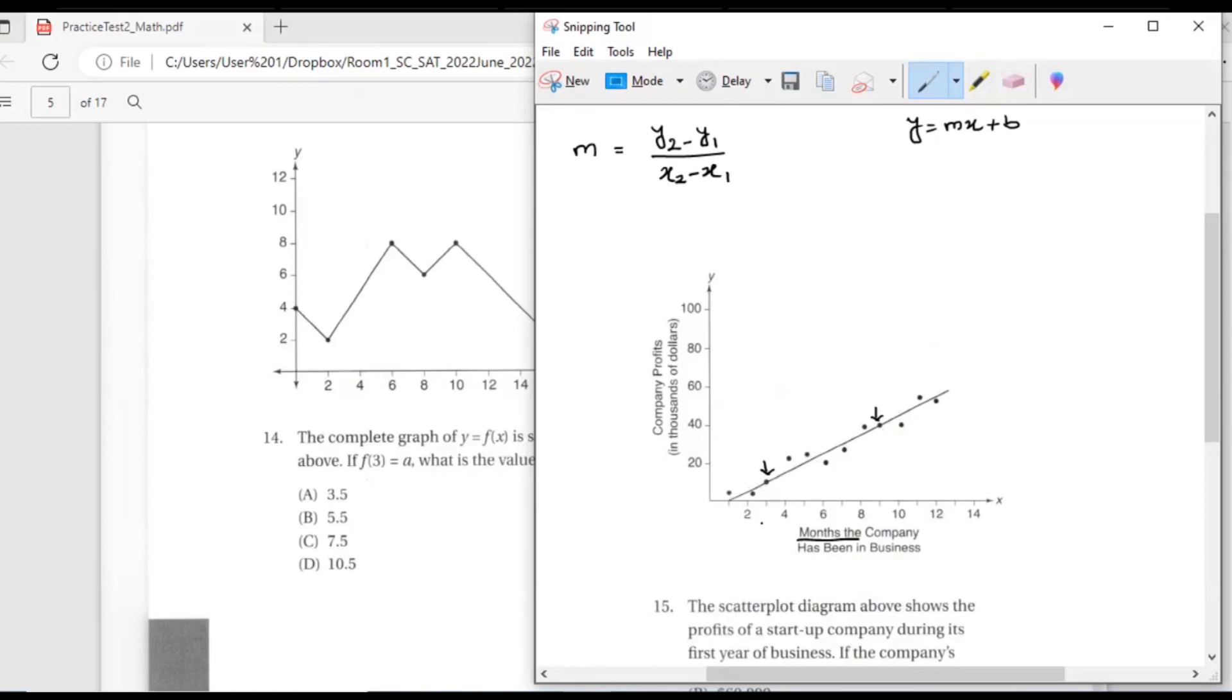What is the first coordinate point? I can say that is 3 comma 10. x1, y1 is 3 comma 10. How about the next point? 9 comma 40, right? So substitute. What is y2 minus y1? 40 minus 10 is 30. What is x2 minus x1? 9 minus 3 is 6. What is 30 over 6? 5.